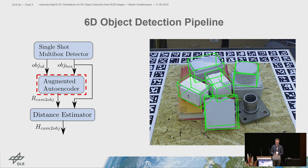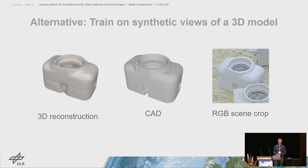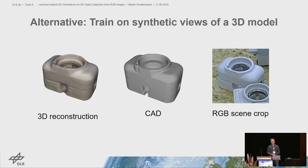A particular problem for learning-based approaches is that they usually require pose-annotated data, but pose annotations are really expensive to generate — it is time consuming and requires a complex setup. An alternative is to train on synthetic data, for example on a 3D reconstruction or a CAD model, but then the challenge is to generalize to a real scene crop.